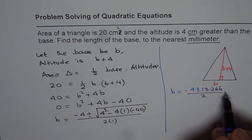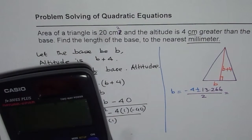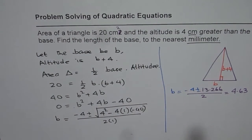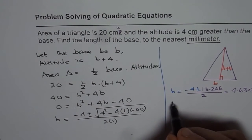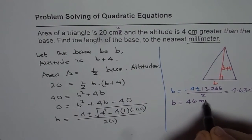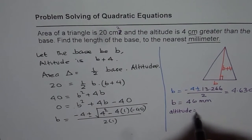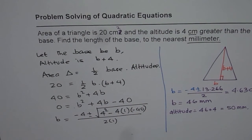We should use the positive value: take negative 4 plus 13.266, then divide by 2 to get B equals 4.633. Since we have to write to the nearest millimeter, that is 4.6 centimeters, or 46 millimeters. If B is 46 millimeters then the altitude will be 46 plus 4, which is 50 millimeters. So the base is 46 millimeters and the altitude is 50 millimeters.